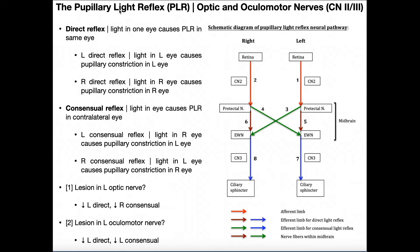Most of us have some idea what the pupillary light reflex is — you've gone to the doctor or optometrist and they shine a light in your eye, and presumably they're looking for constriction of that pupil, but it's so much more than that. The first response is called the direct reflex. This is when you shine light in one eye and it causes the reflex in the same eye. We can have a left direct reflex, where you shine light in the left eye and that causes pupillary constriction in the left eye, or a right direct reflex where you shine light in the right eye and get constriction in the right eye. The direct reflex is where you shine light in one eye and the ipsilateral pupil constricts.